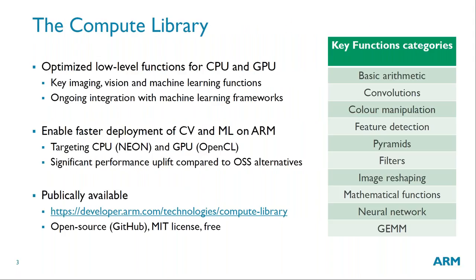So what is the compute library? The compute library is a collection of optimized low-level functions for ARM CPU and ARM Mali GPUs. It contains image processing functions, computer vision and machine learning functions, optimized for the ARM architectures. You can see on the table on the right a list by category of what you'll find inside the library: basic arithmetic and mathematical functions, convolutions, common filters, column manipulation functionality, feature extraction and feature detection, image reshaping, and more. Most recently, we also started to add machine learning building blocks as well as matrix multiplier functions.